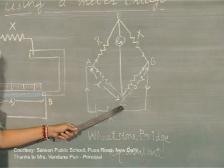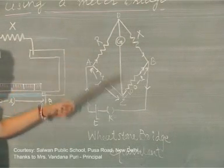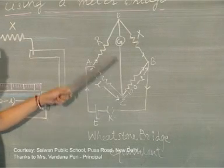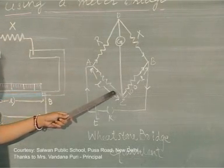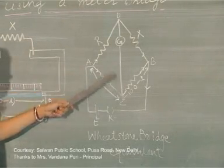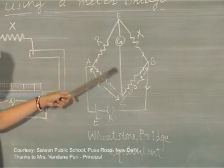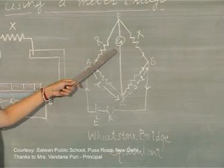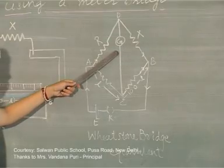If the potential is the same at points D and C, no current will flow. If there is no potential difference, there will be no current in arm DC, and the galvanometer will show no deflection — that is, zero current. This is the null point condition.